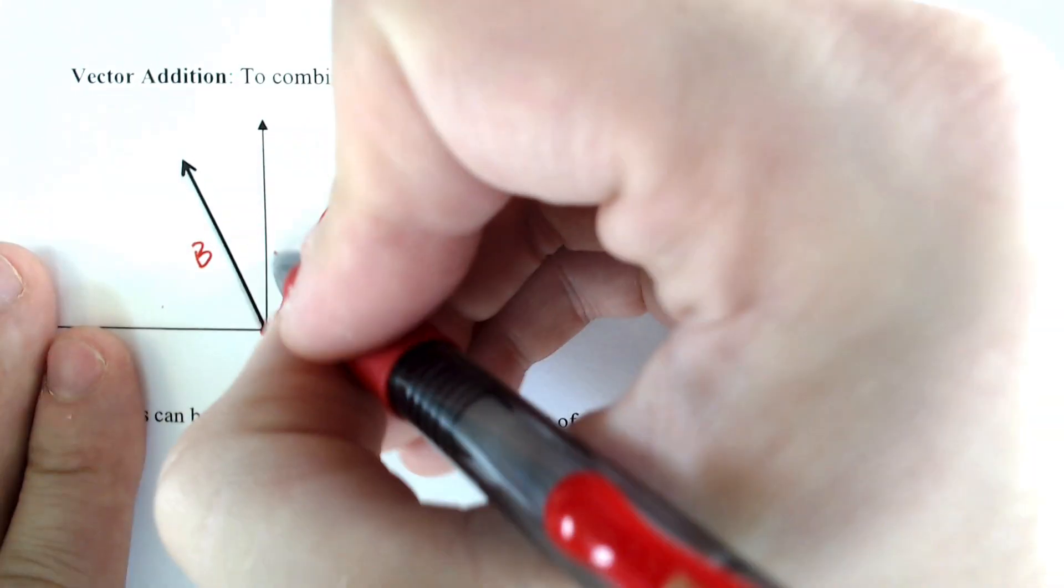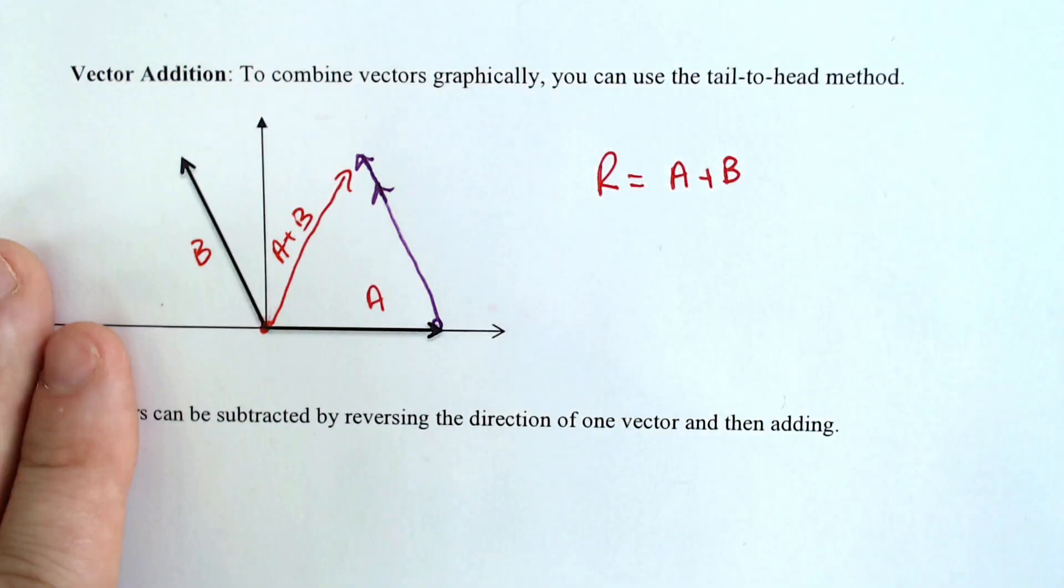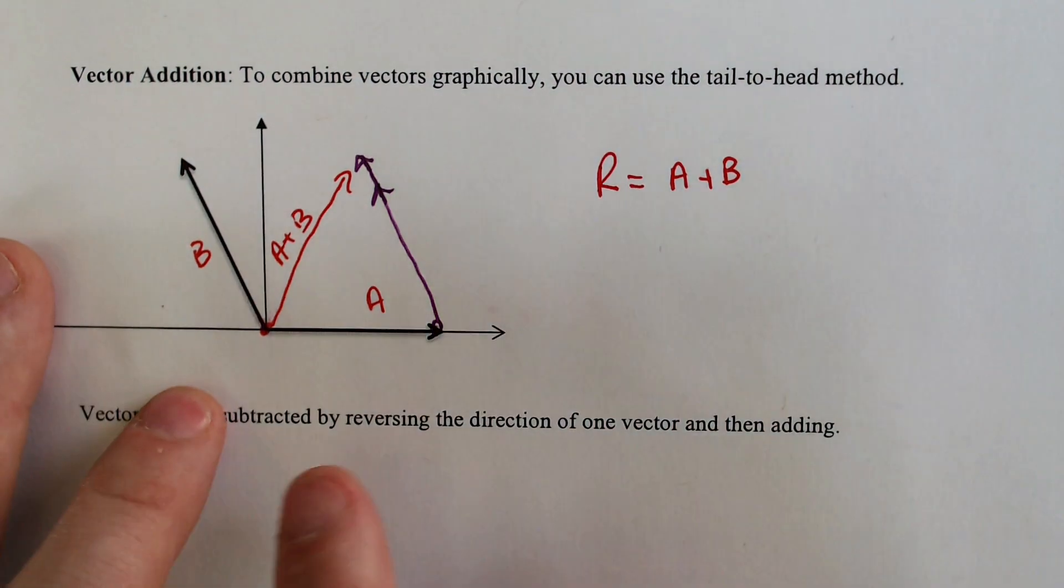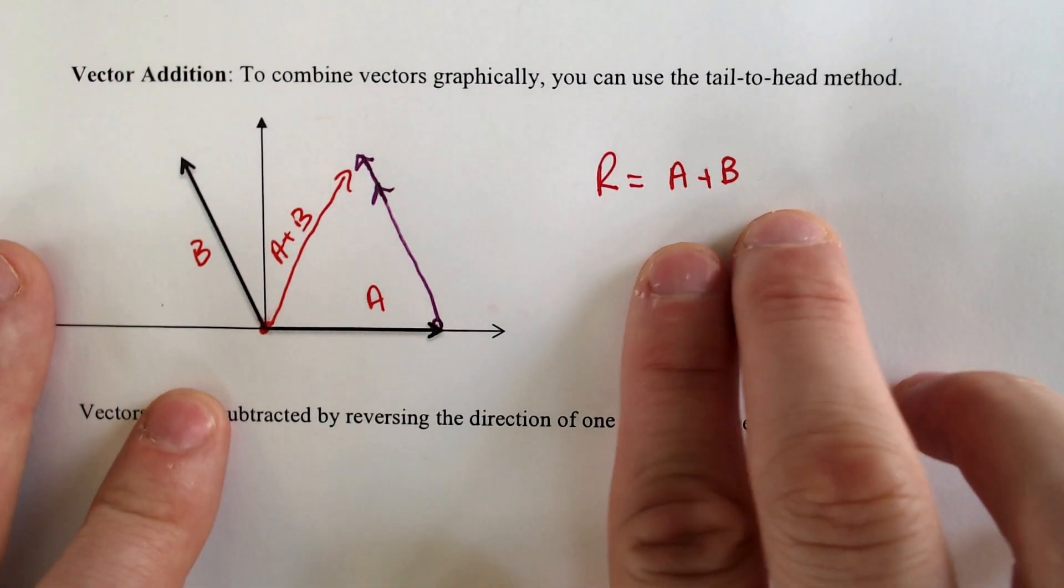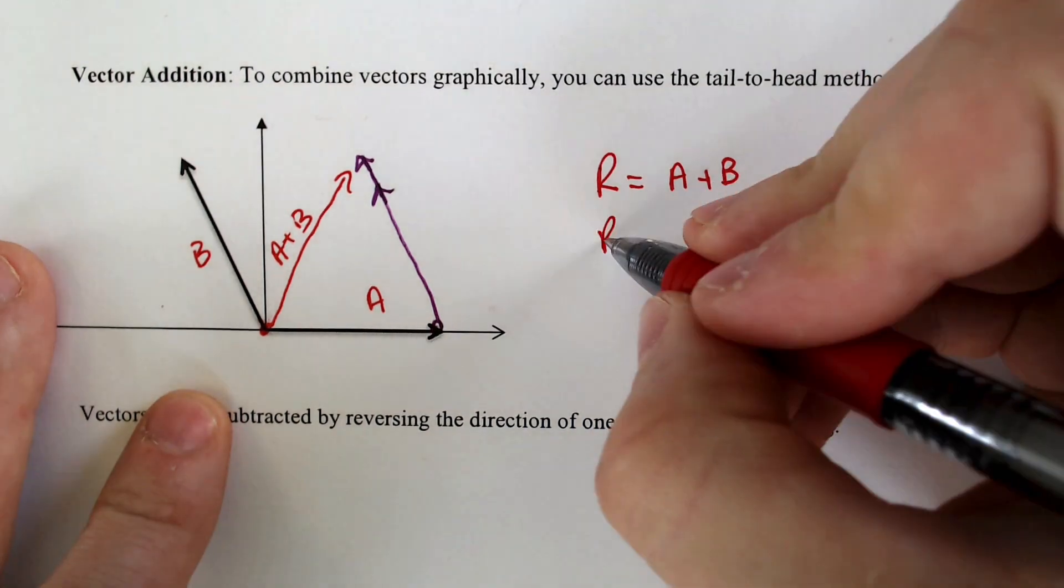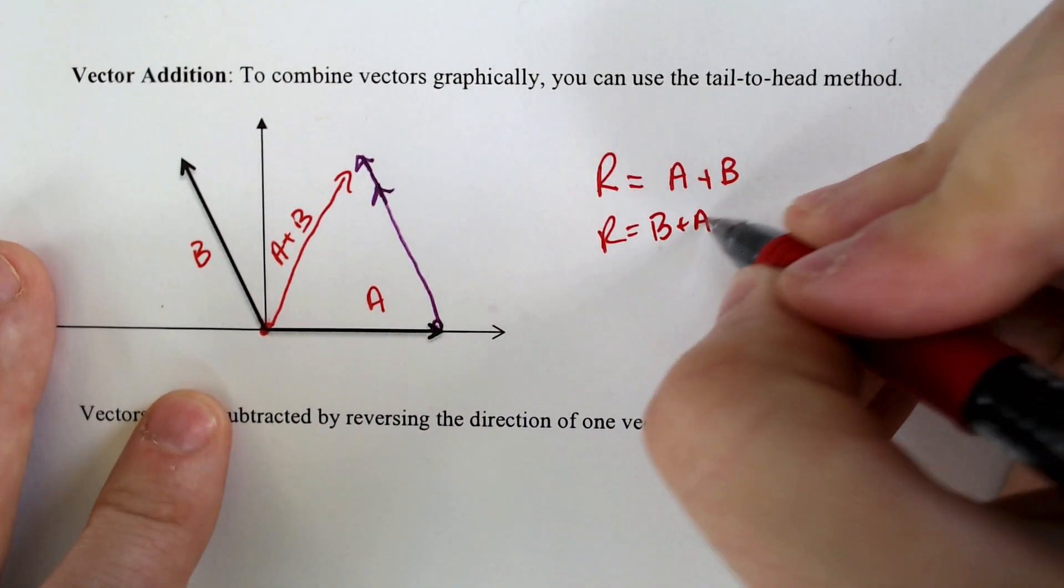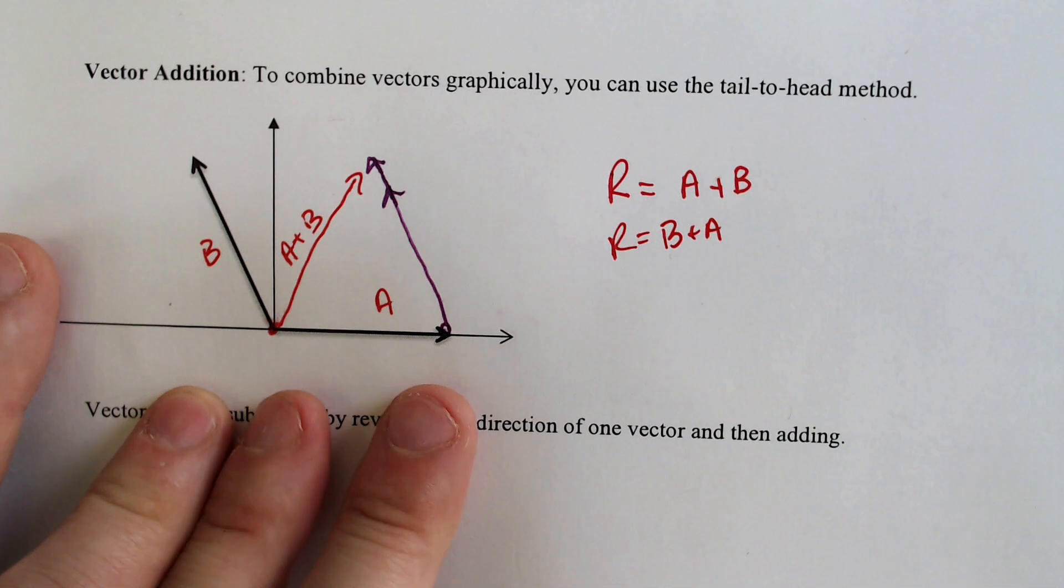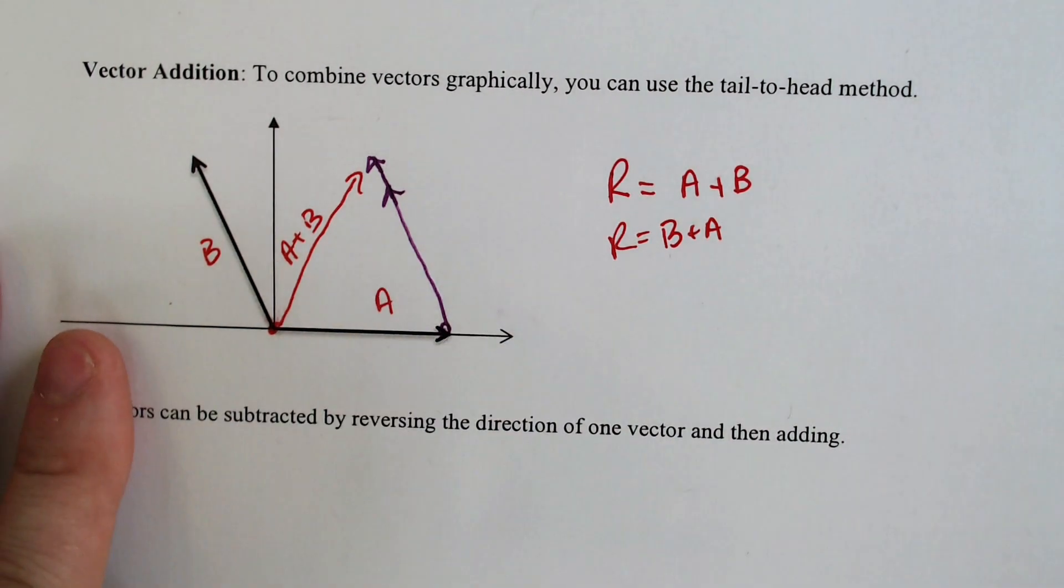This guy right here would be A plus B. Now what would happen if we were to take the other way around because there is commutative property here. If we did B plus A, if we flip the order, that means that we would take A and I would put A, this guy right here, at the top.